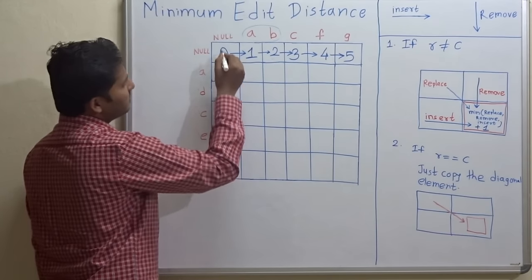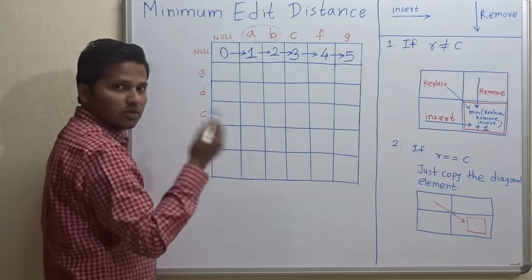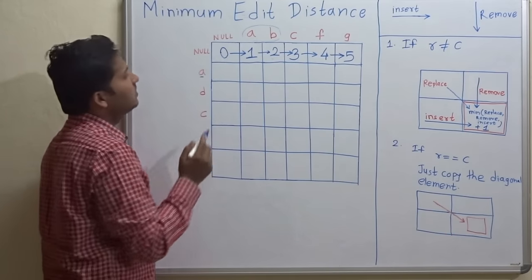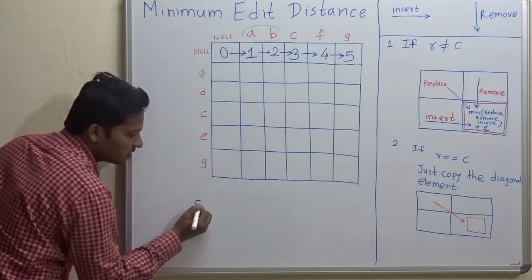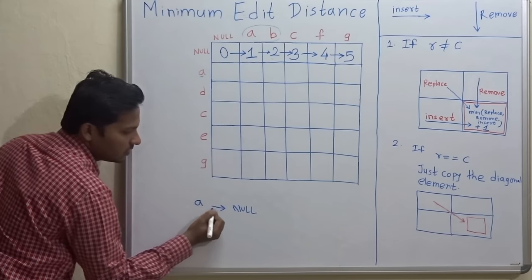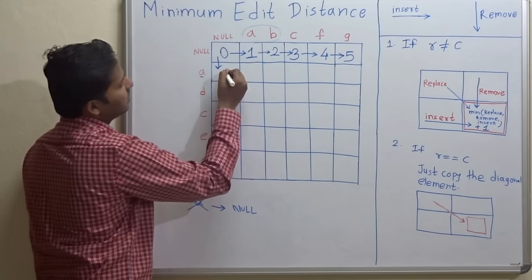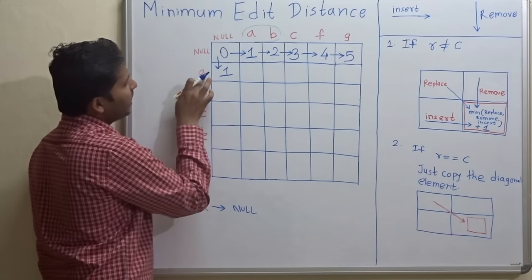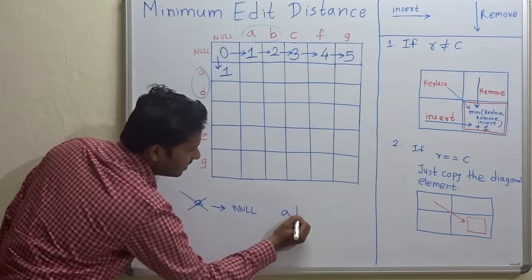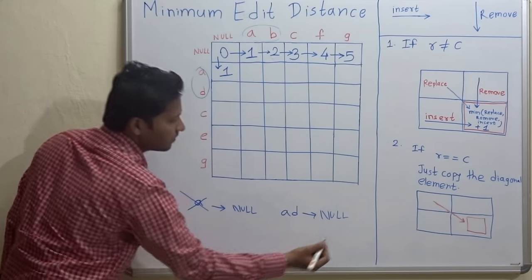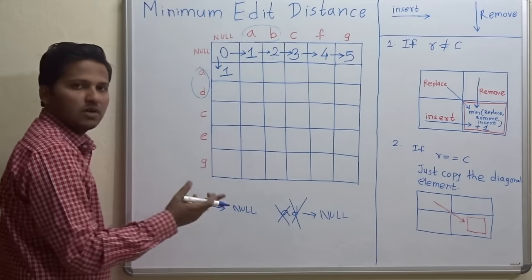Let's go to another base condition — that is the first column. If you have string 'a' and you want to convert it into a null string, then you have to remove 'a' from that string — one operation. The vertical arrow represents the remove operation, so one operation.